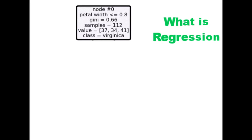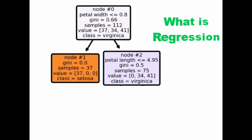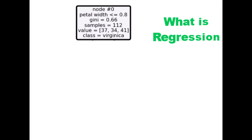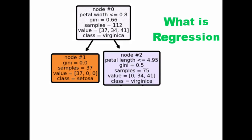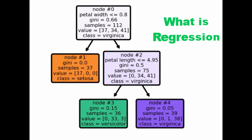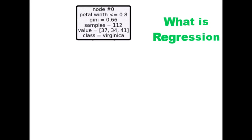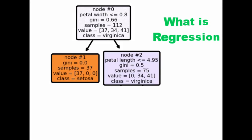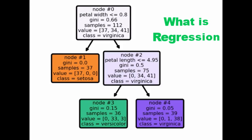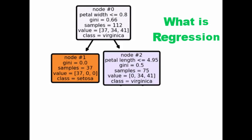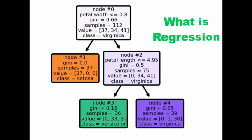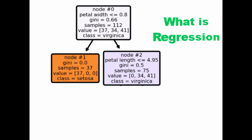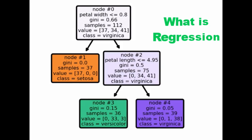Regression is a statistical method. It attempts to determine the strength of the relationship between a dependent variable, or label, and a series of other variables called independent variables or features. Regression is one of the most fundamental and basic machine learning algorithms. The column values used to predict the output are called features or independent variables, and the column value that is predicted is called the dependent variable or label.